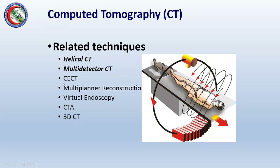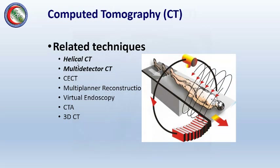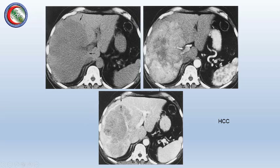We can inject contrast material for contrast-enhanced CT. We can do multi-planar reconstructions, taking axially acquired images and reconstructing them on a computer to get sagittal and coronal images. Special techniques include CT angiography, virtual endoscopy, and 3D CT.